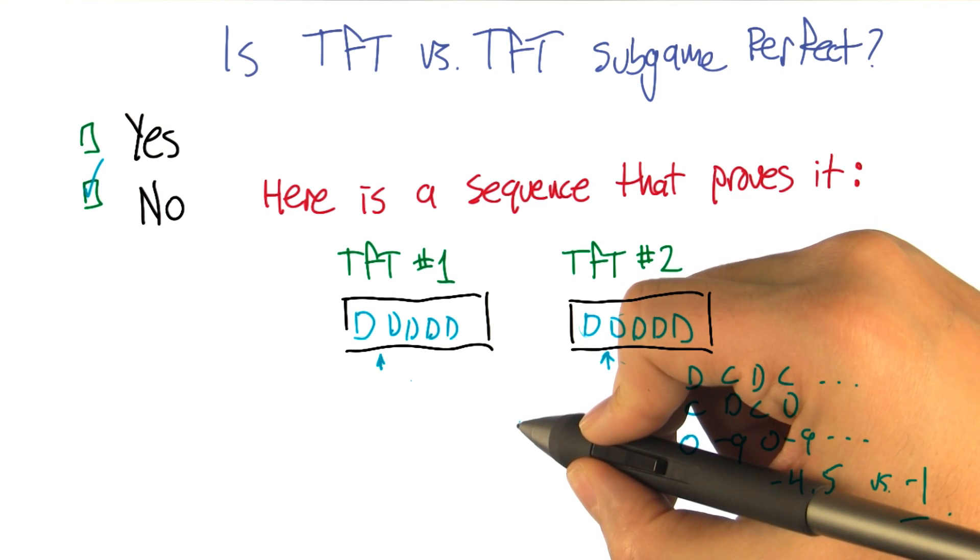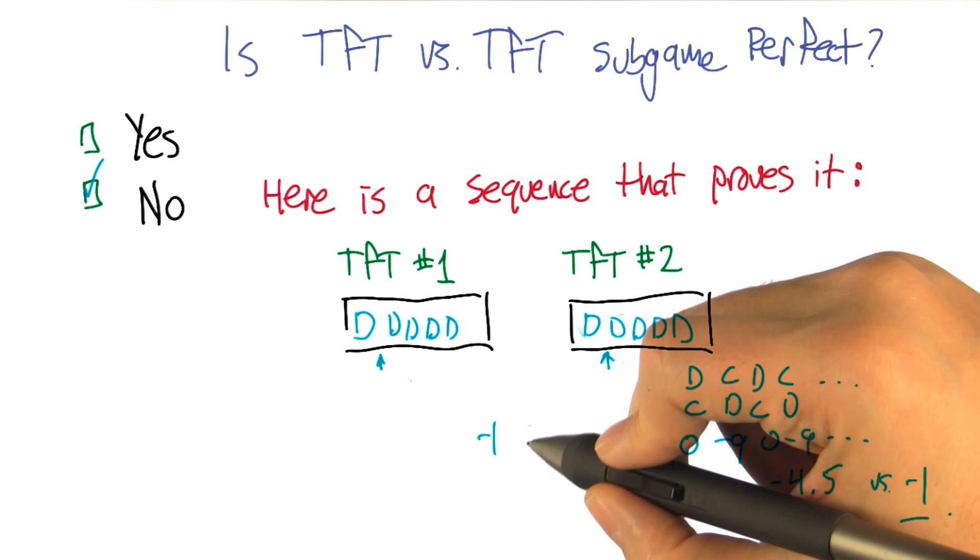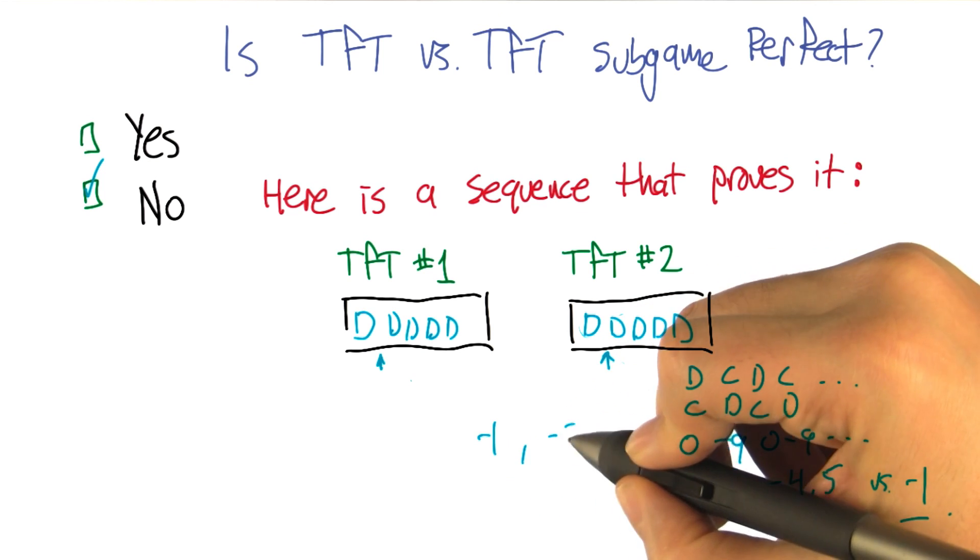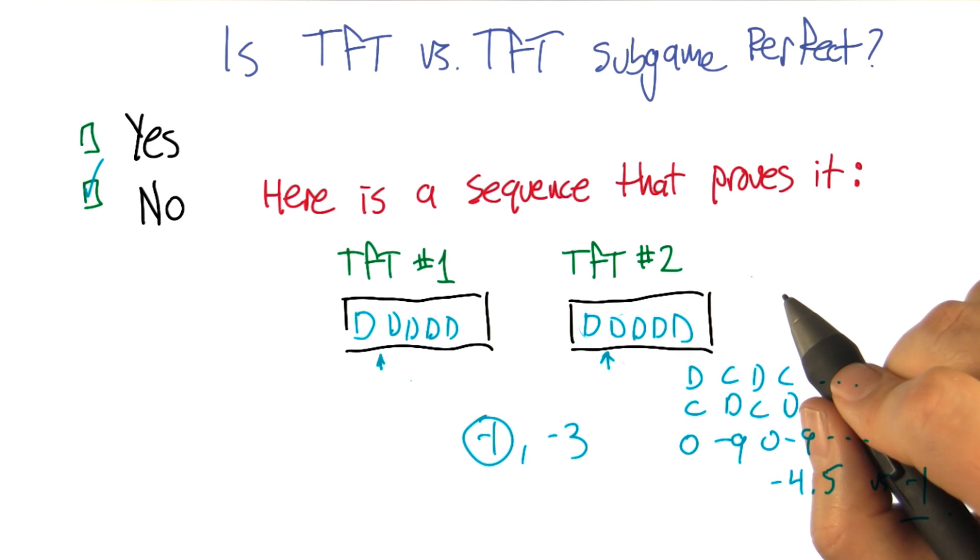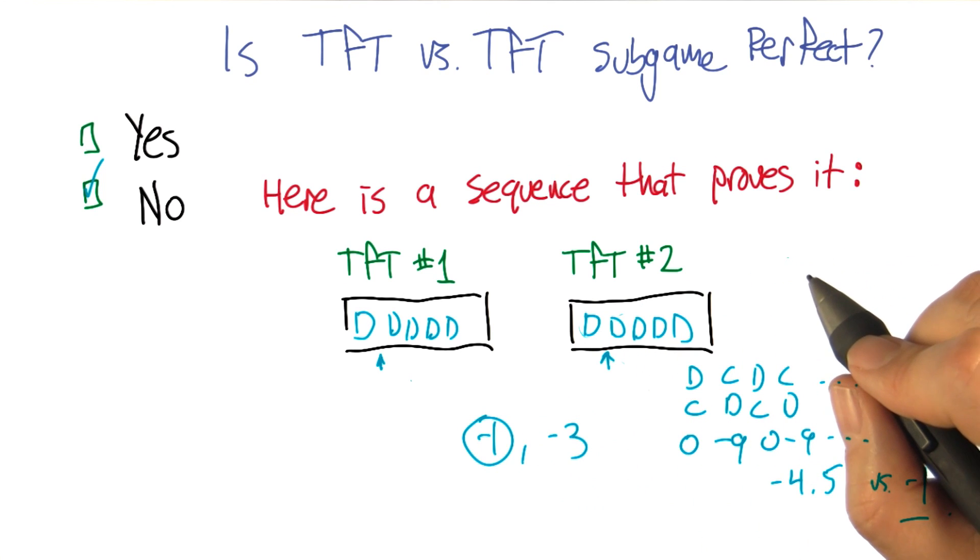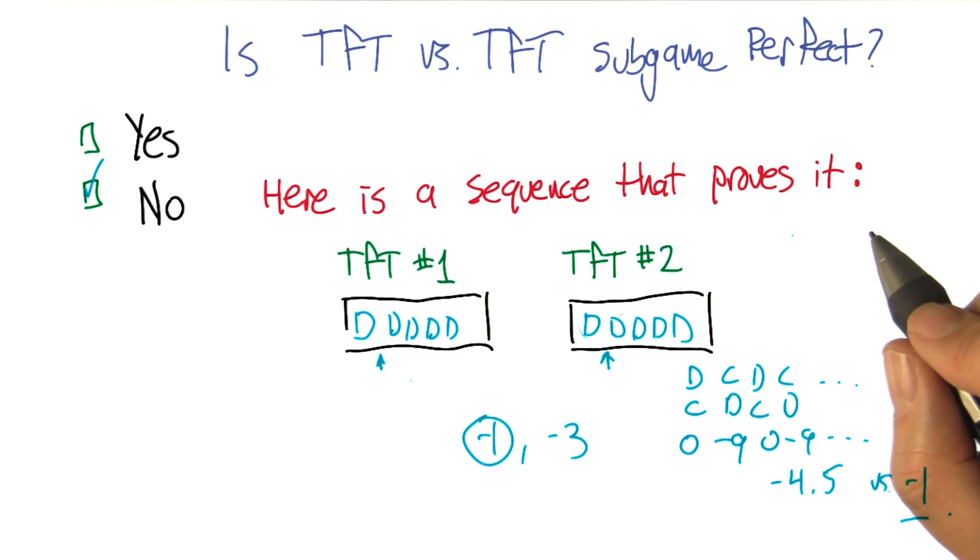So in one case it would average to minus 1, and the other one it would average to minus 3, and minus 1 is better. So you're right. Good point. So really what matters is that we get them defecting. Right. Okay, so that makes sense. So I was right that it didn't matter, although you do get slightly different answers. Or slightly different averages. That's right. But in both cases there's a way of getting a higher average.